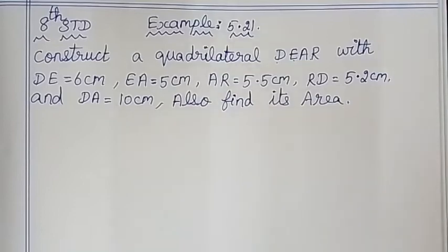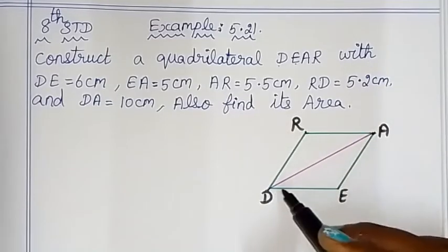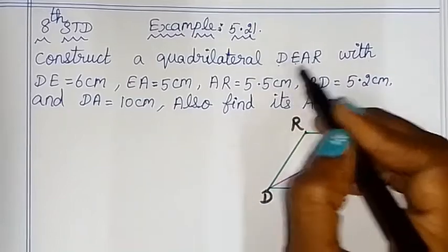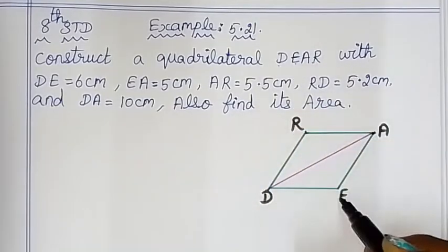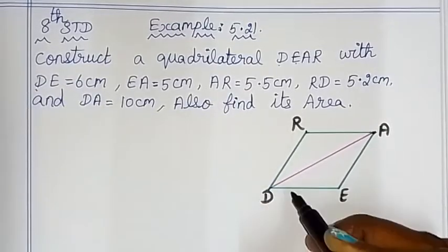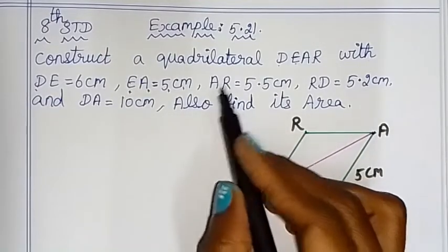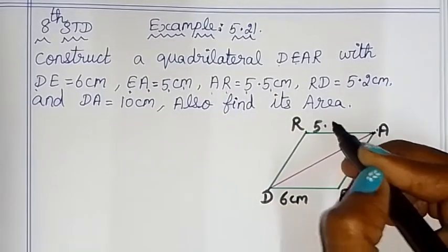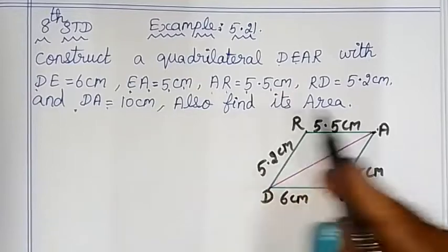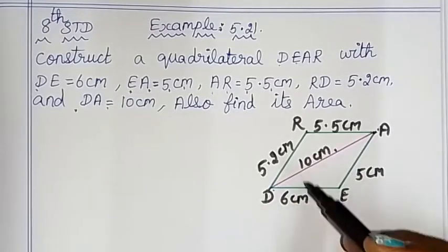First, draw a rough diagram of quadrilateral D-E-A-R. Now we have a quadrilateral, so let's move into the measurements. DE is equal to 6cm, EA is equal to 5cm, DA is equal to 10cm, DR is equal to 5.5cm, RE is equal to 5.2cm, and the diagonal DE produces a value of 10cm. We will use these measurements to also find the area.